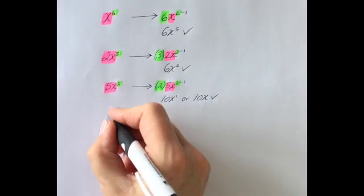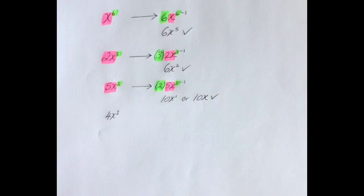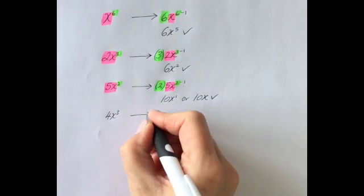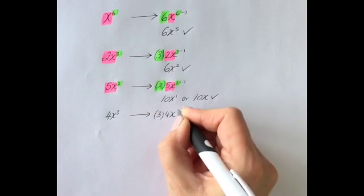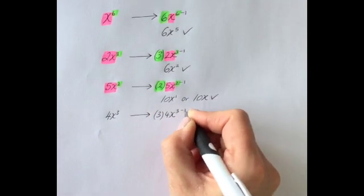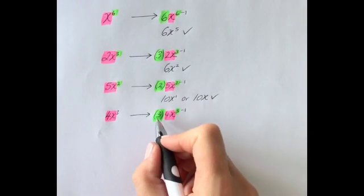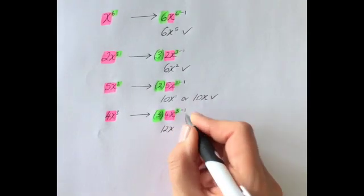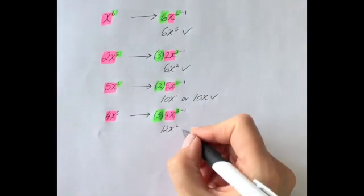Try 4x cubed — differentiate this for me. Pause the video. So we bring down the power, we have 4x, and we take 1 away from the power. This simplifies to 3 times 4, which is 12 — so 12x. And 3 take away 1 is 2. So the answer is 12x squared.